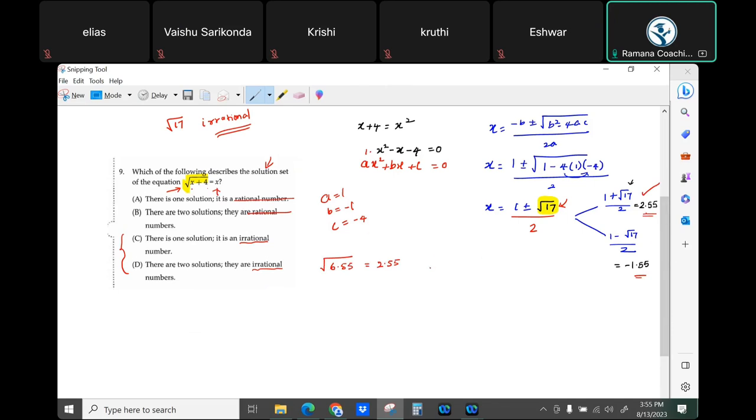Whereas this one, if you plug in negative 1.55 plus 4, what do you get? 2.45, am I right? And then what is the x value I am substituting? So by the way, square root of something, what did I tell you?